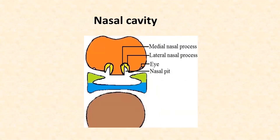We now come to the development of the nasal cavity. The nasal placodes become pits by sinking below the surface and become continuous with the stomatodium. The medial raised edge of the pit is called the medial nasal process, while the lateral raised edge is called the lateral nasal process.